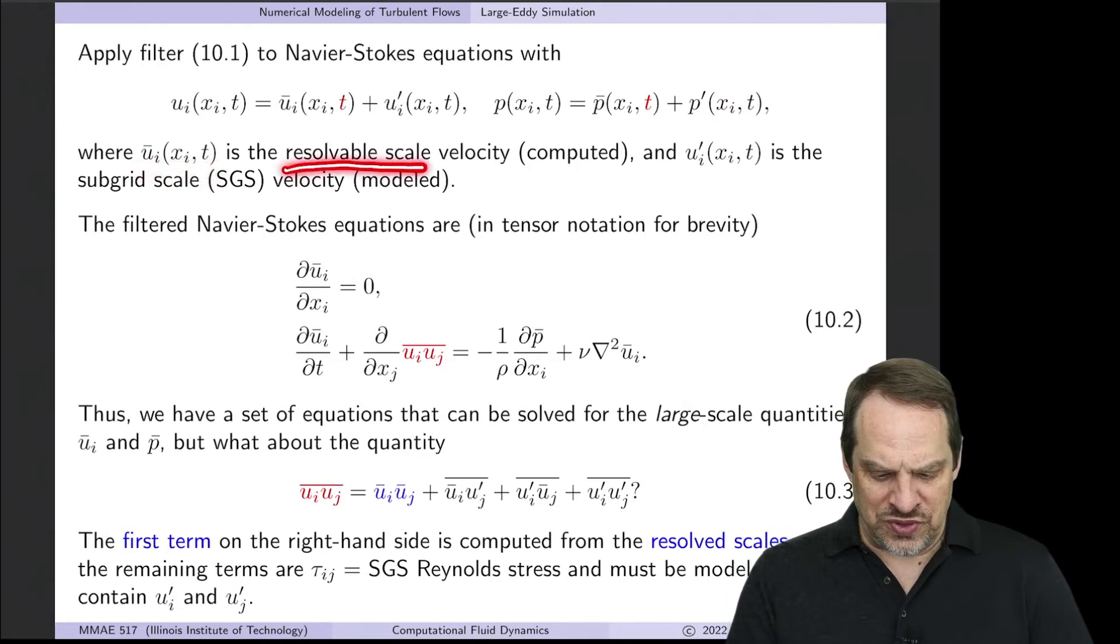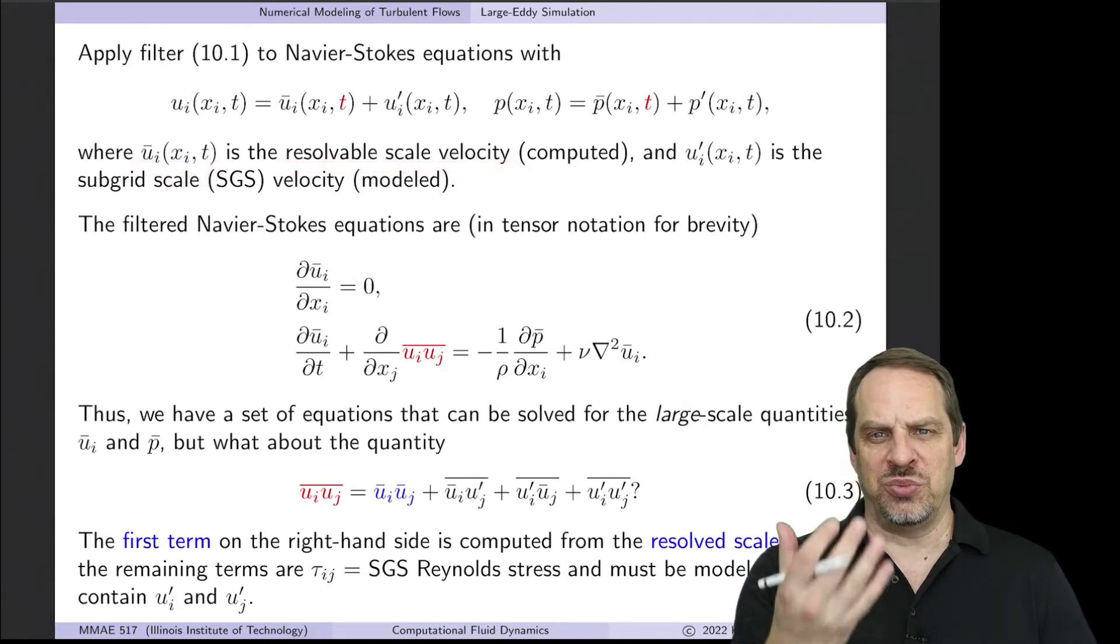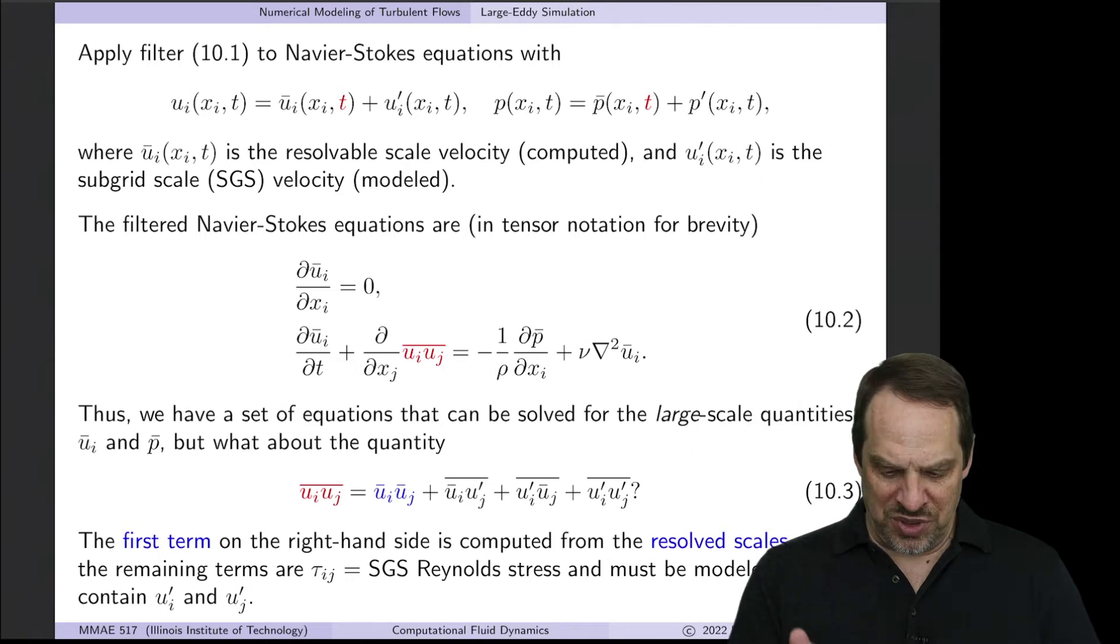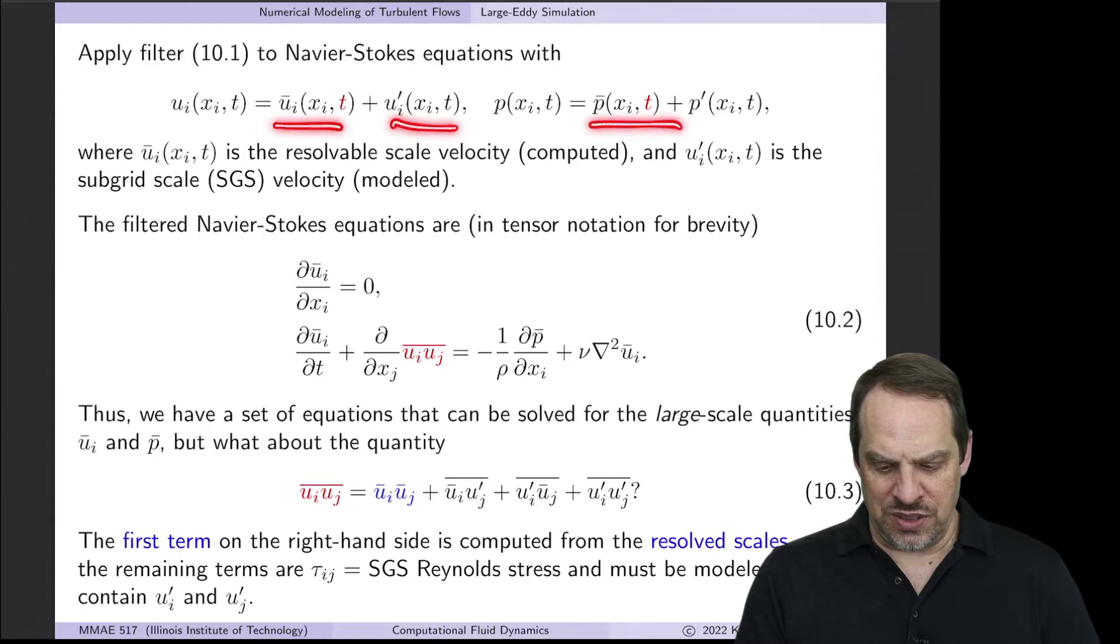The u-bars are the resolvable scale velocities computed by large eddy simulation, whereas u-prime is the subgrid scale or SGS velocity and pressure that is modeled. Simulated versus modeled, large scales simulated, small scales modeled.